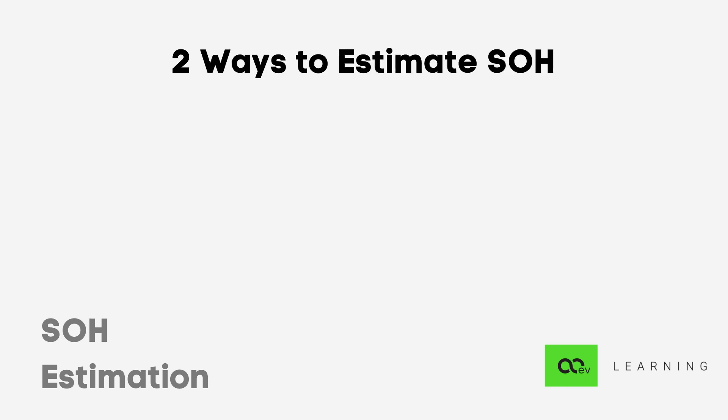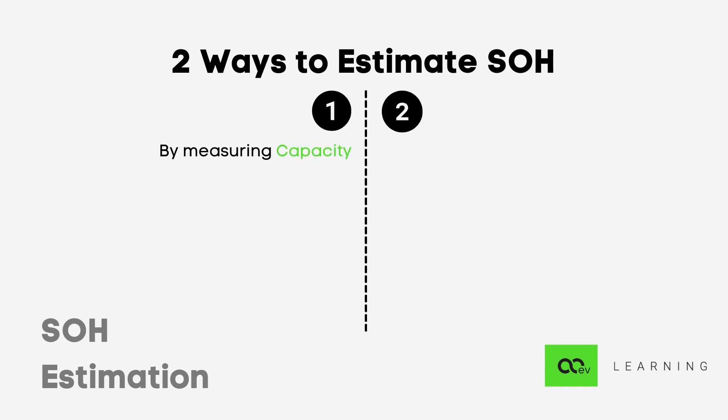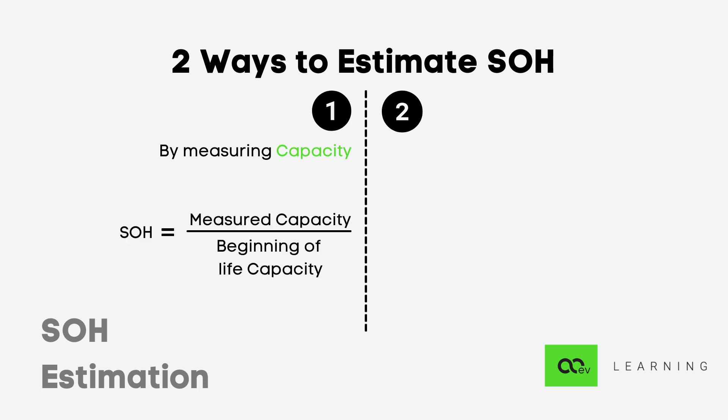So how do we calculate SOH? There are two methods. The first: periodically we completely discharge and then charge the battery, tracking the open circuit voltage (OCV). We then discharge the battery slowly and carry out a coulomb count to determine the exact capacity the battery can hold. SOH equals the measured capacity divided by the beginning-of-life capacity.